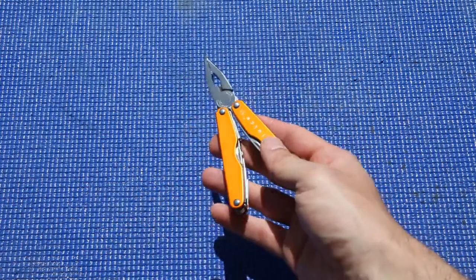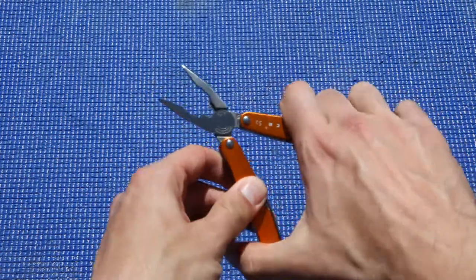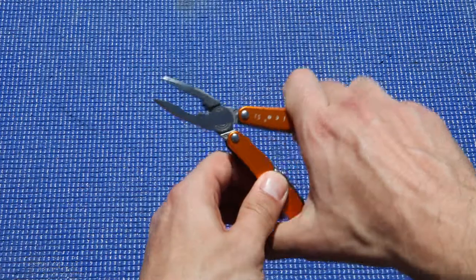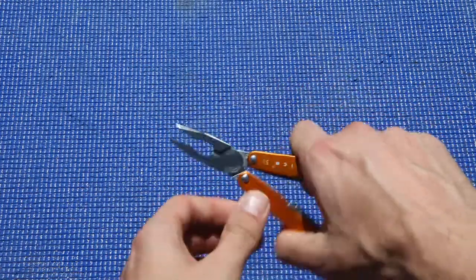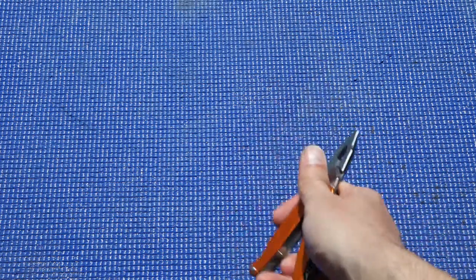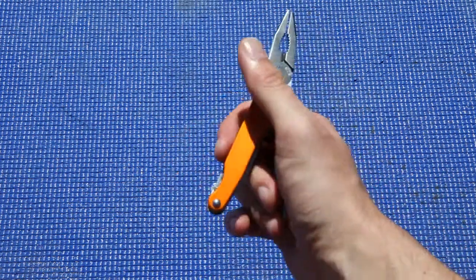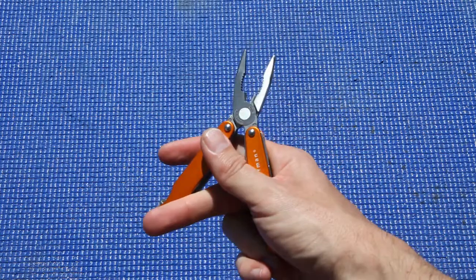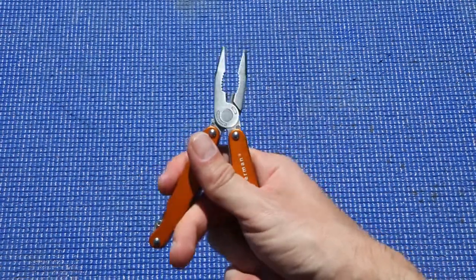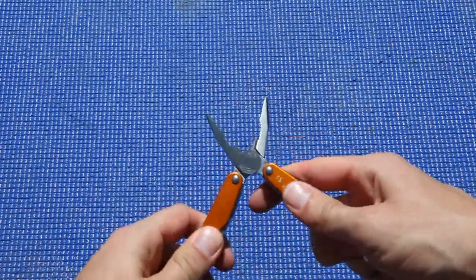One thing I noticed about the Juice right away is that the pliers don't have a spring in them, so you're manually opening and closing them. You don't have to do that on the Squirt - there's a spring there. But on the skeletal tool you do have to do that. Maybe I just need to use these a little bit more, but it's a little slow or kind of hard to do. But anyways, pretty cool.